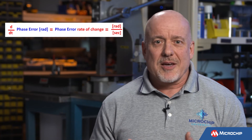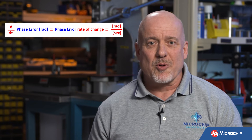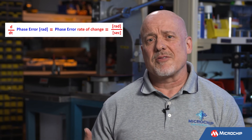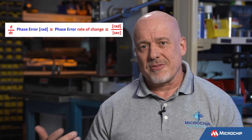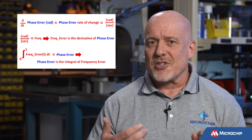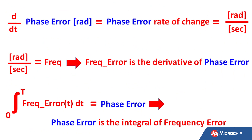Let's generalize this further. The assumptions so far have been that the phase error changes at a constant rate, meaning a constant frequency difference between the two clocks. In reality, a phase error may not change at a constant rate, and a frequency error may not be constant. This is where we use calculus. The derivative of a function is its rate of change, so the derivative of phase is the rate of change of phase — which is frequency. Therefore, the derivative of phase error is frequency error. If we integrate a frequency error over a given amount of time, we can see how much the phase error has accumulated over that same time. The takeaway: the derivative of phase error is frequency error, and the integral of frequency error over a period of time is the accumulated phase error.